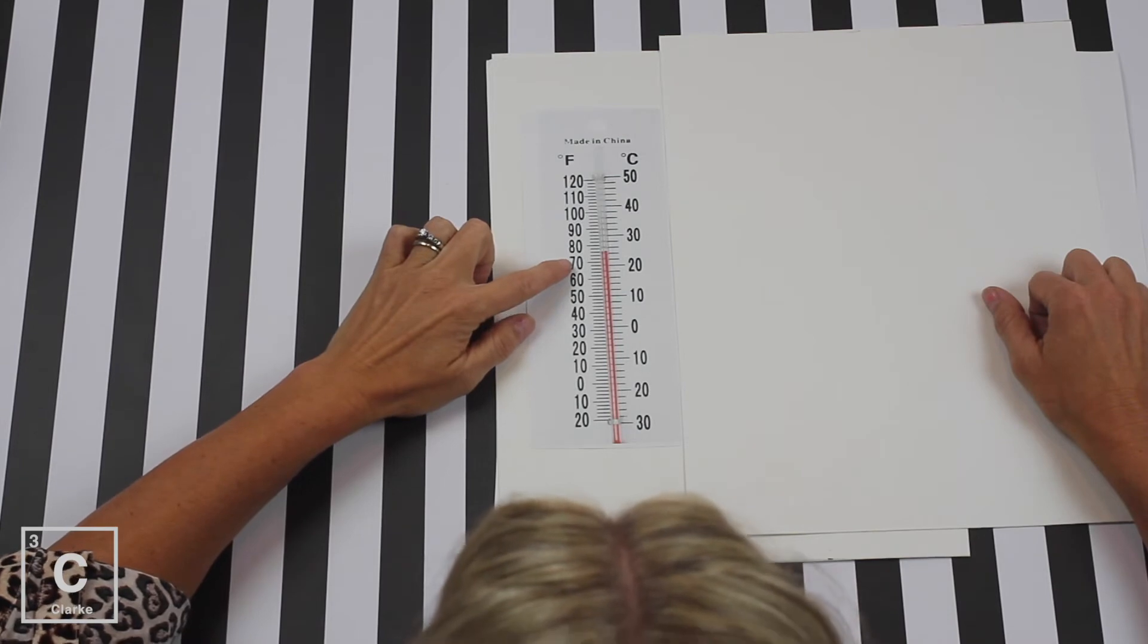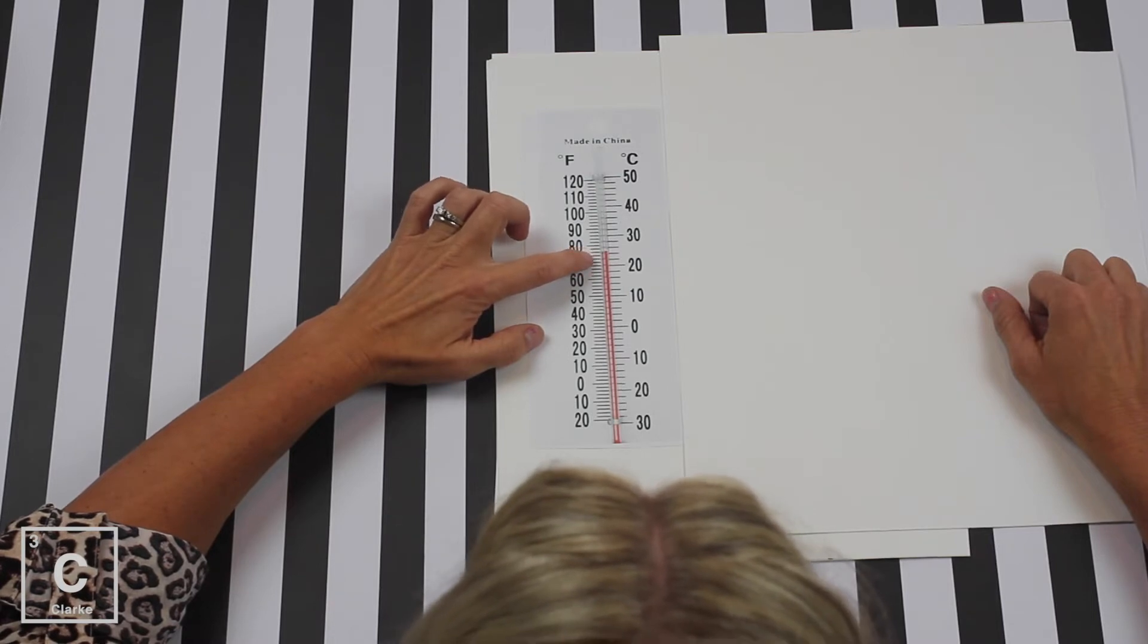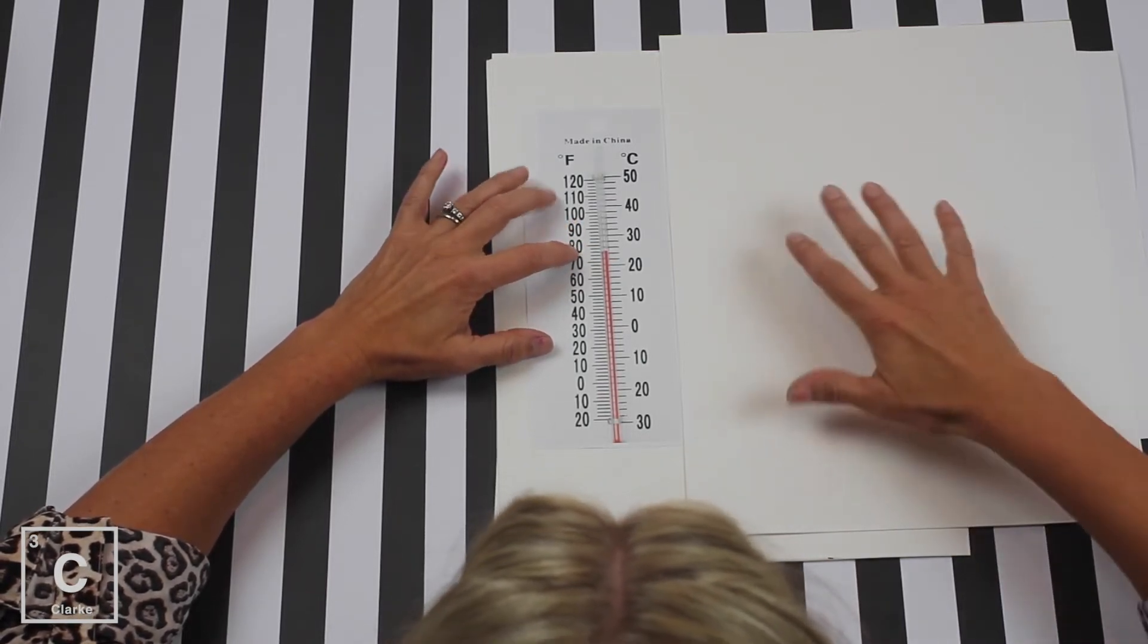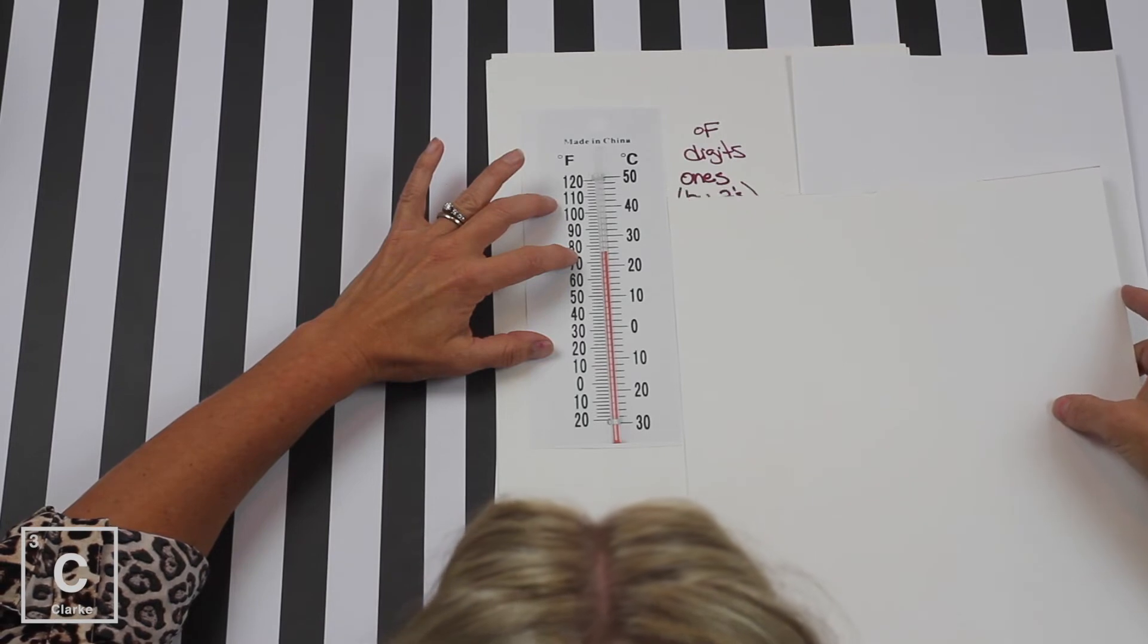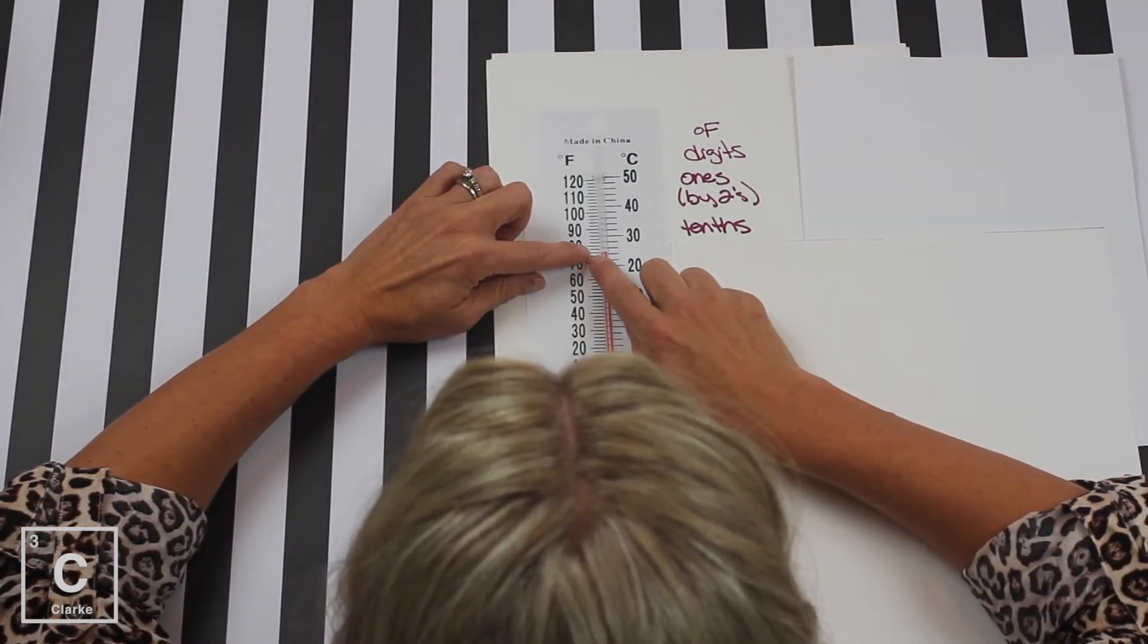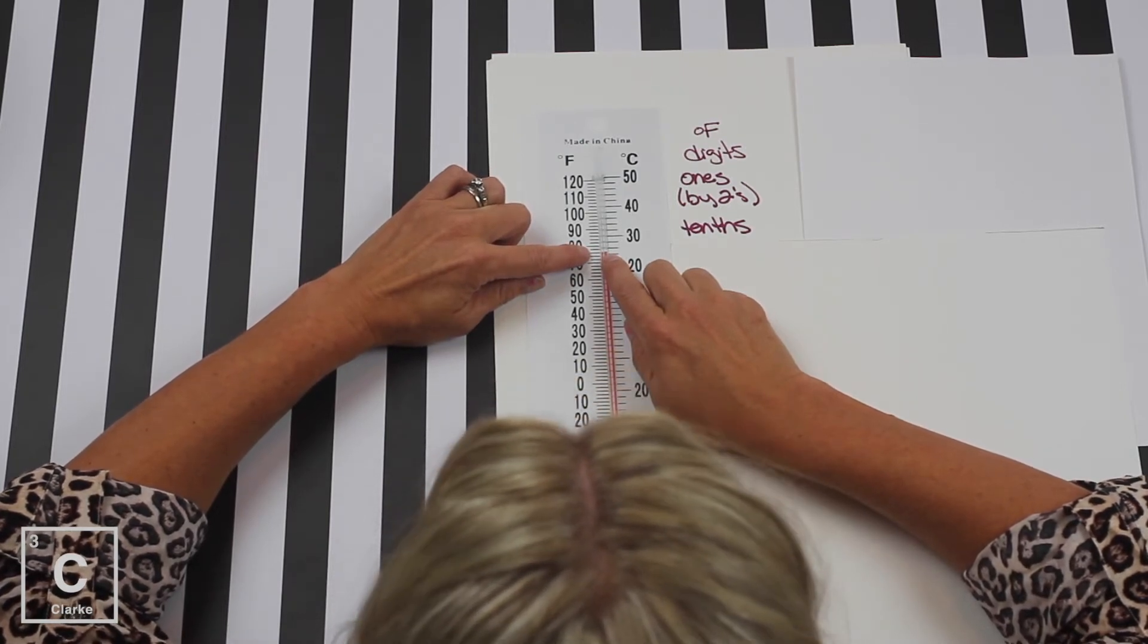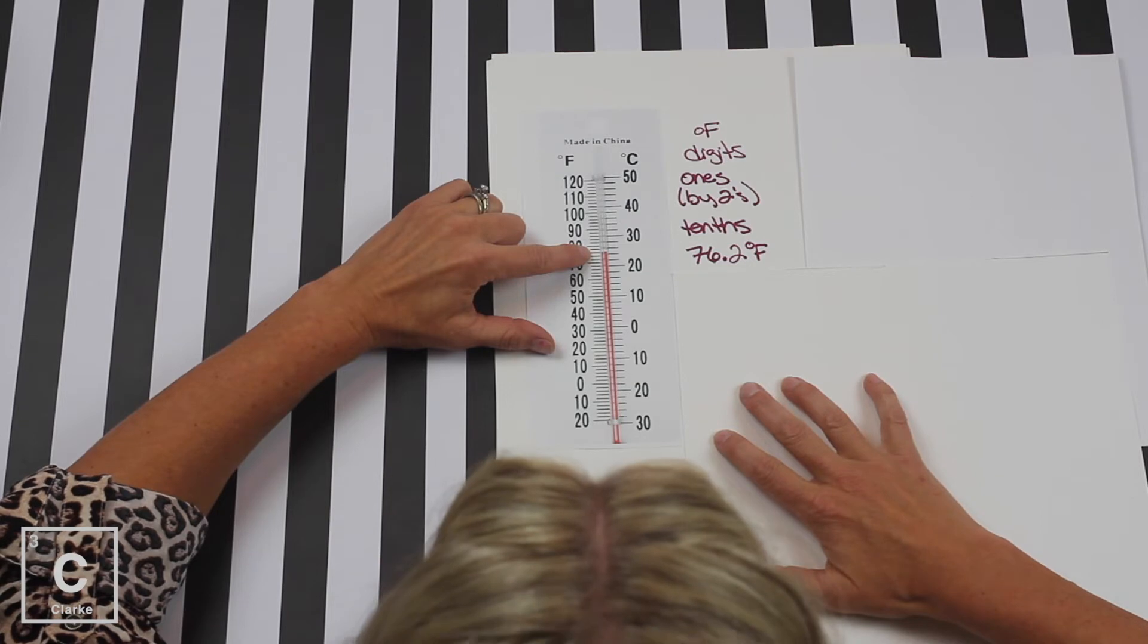So let's look at Fahrenheit. We see our red line here is between the 70 and the 80. Each line, because there's only five of them, represents 2s. 72, 74, 76, 78, 80. But when we count by 2s, a 2 is in a ones place. So this piece of equipment can measure to the ones place, even though we're counting by 2s. So that means our estimated digit has to be to the tenths place. So we've got 72, 74, 76. Now I think that red line goes just a teeny hair above that 76. So I am going to estimate that as a 2. 76.2 degrees Fahrenheit.